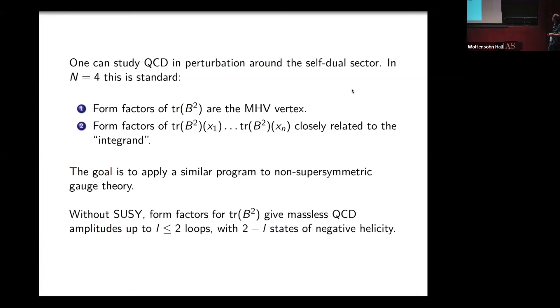For today, I'm going to be interested in what happens if I insert one copy of trace B squared. I'm deforming away from the self-dual sector to first order. What you find, without supersymmetry, is that form factors of this operator in the self-dual theory are massless QCD amplitudes up to two loops, with two minus L states of negative helicity.